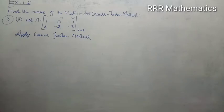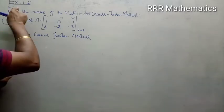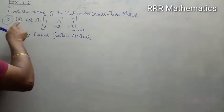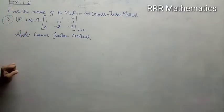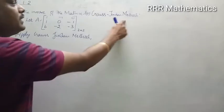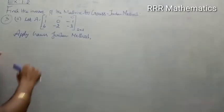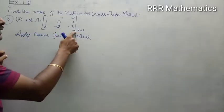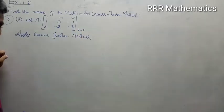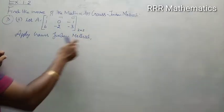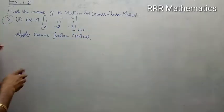Hi, my dear students. Today we will discuss exercise 1.2, third problem, second one: find the inverse of the matrix by Gauss-Jordan method. Very simple. Let us take the given matrix as A, whose order is 3 by 3 in this case. Apply Gauss-Jordan method.